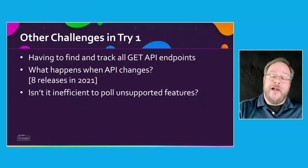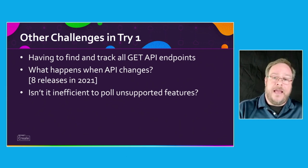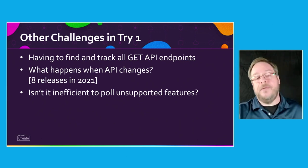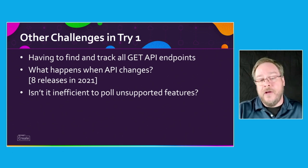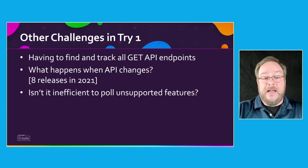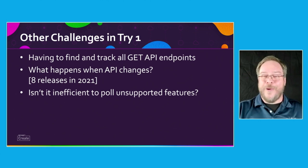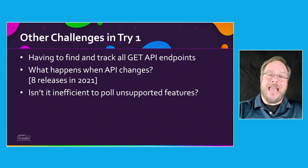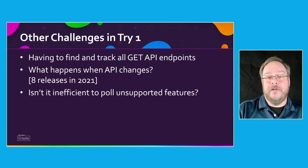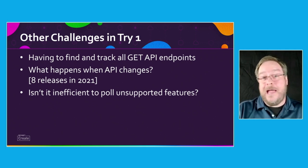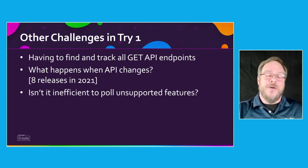There were other challenges we also had to deal with — how do we find and track all the GET API requests and endpoints? And what happens when those APIs change? We want to make sure we're capturing all these settings. True to form, the Meraki team had eight different releases in this past year — I guess they're working in an agile model. We also have to think: isn't it inefficient to pull unsupported features for equipment that doesn't use them? So we needed to figure out ways of updating our logic.